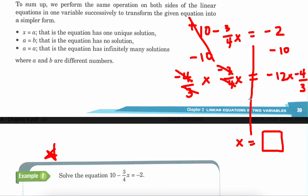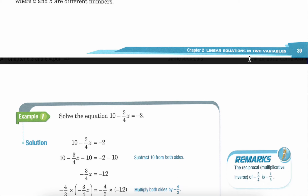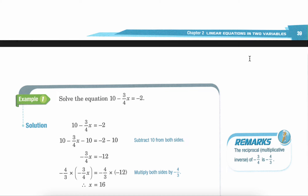And then I have negative 12 times negative 4 thirds. I'm going to put a 1 on the bottom of 12 so that I see it as a fraction. The 3 and the 12 can be reduced to 4. So this ends up being negative 4 times negative 4, which is positive 16. So you should have gotten positive 16.